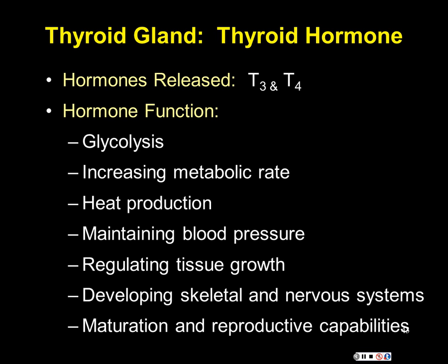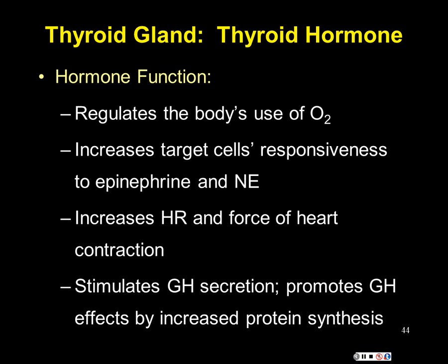Basically all body tissues are dependent on thyroxine, which regulates oxygen use — tying back to our lab this week. Thyroxine also makes cells more sensitive to sympathetic neurotransmitters, epinephrine and norepinephrine, producing a sympathetic effect like increased heart rate. Thyroxine is synergistic with growth hormone, since both are anabolic on many tissues and catabolic on energy stores — they work together to make cells more metabolically active.